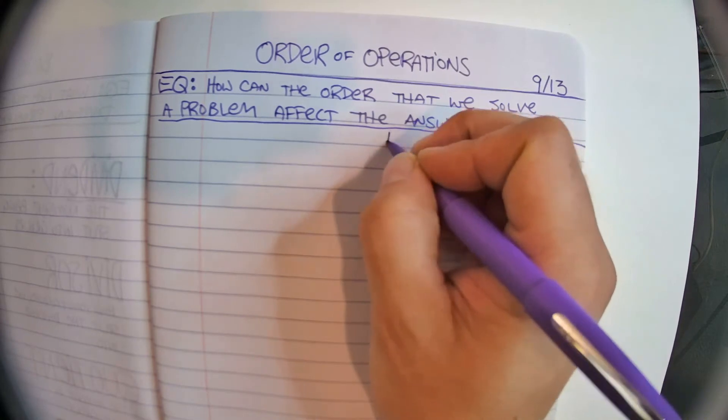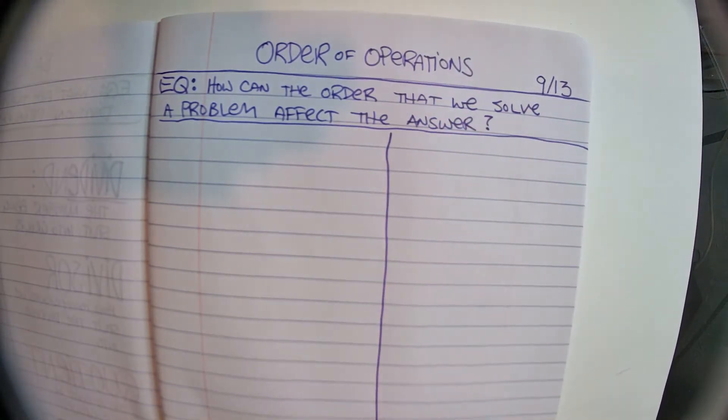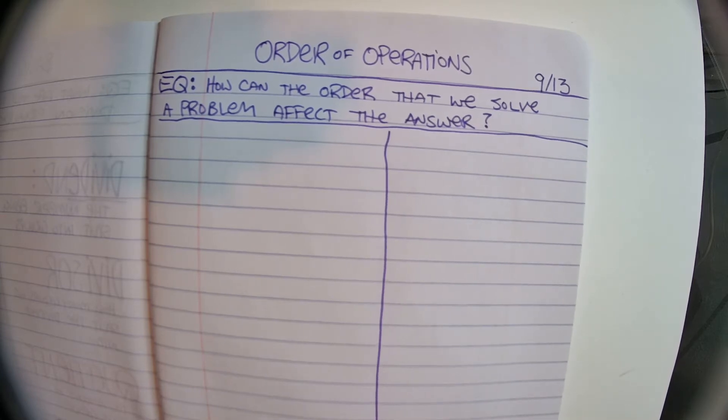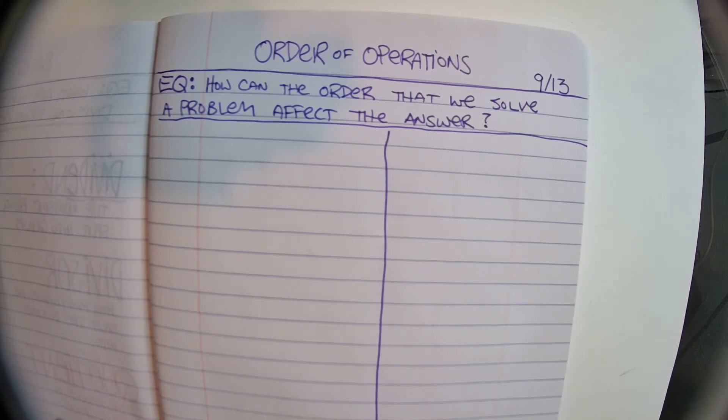At that point, do two-column notes, so you can just draw a line down the middle.